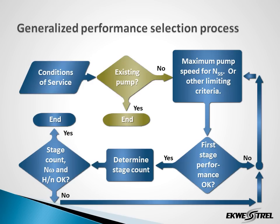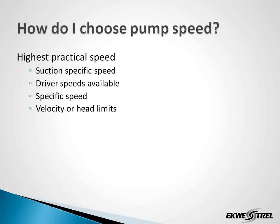Once the conditions of service are established, the first choice would be an existing pump design that can meet all of the performance requirements. Specified industrial pumps, even when they are existing designs, may have some modifications or special materials of construction, and are often manufactured to order. If there is no existing pump design that meets the conditions of service, then the process of finding one starts with selecting the pump speed. The highest practical speed will result in the smallest pump size and most economical selection. Issues related to the selected speed are suction-specific speed, driver speeds available, specific speed, and any velocity or head limitations.